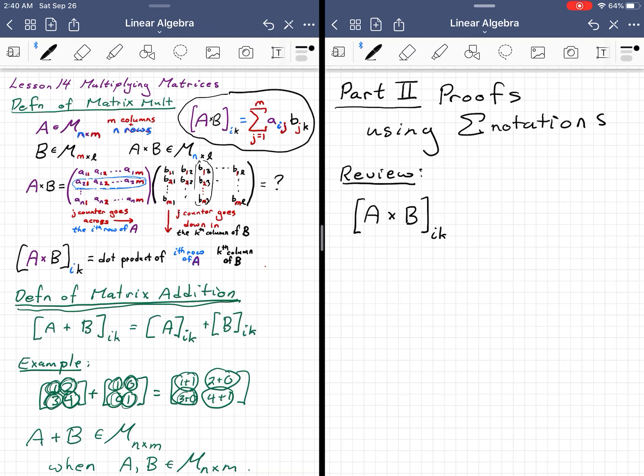...is the sum from j equal 1 to m of the matrix A i,j, B j,k.